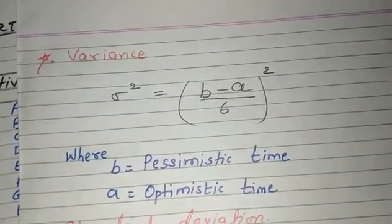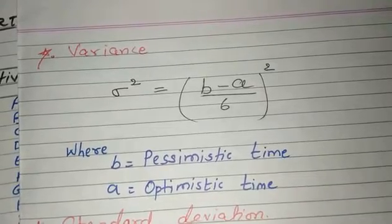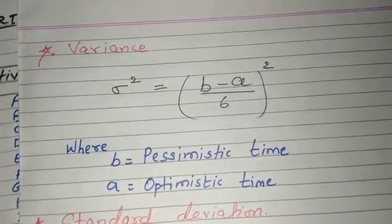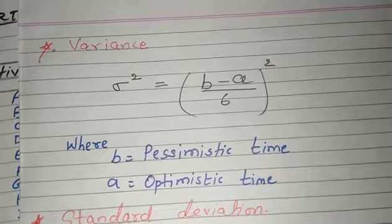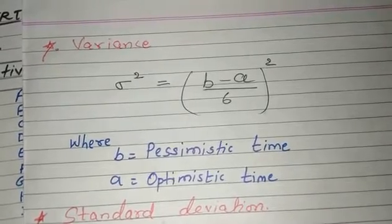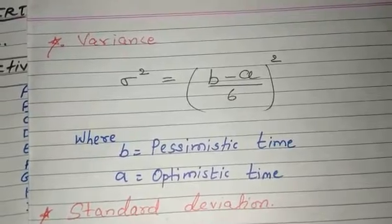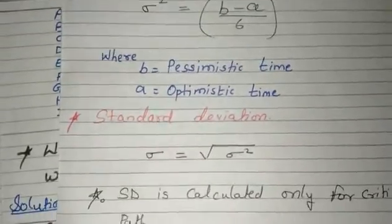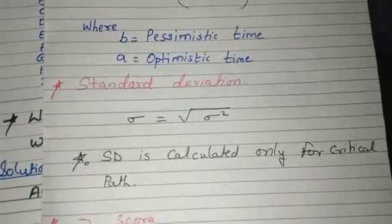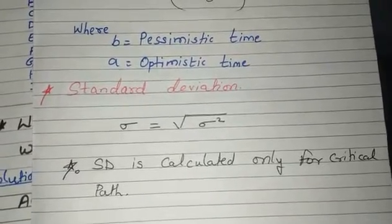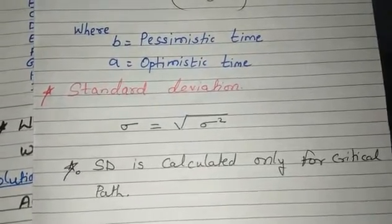After that we will try to find out variance. Variance has the formula: ((b - a) / 6)². Again after that we have to find standard deviation. Standard deviation would be always the square root of variance.